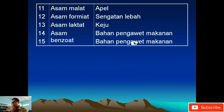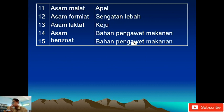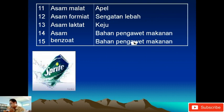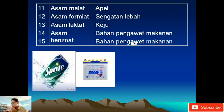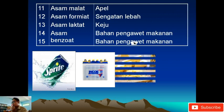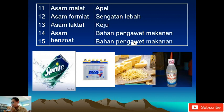Asam tartrat terdapat pada anggur, asam malat pada apel. Kalau kalian perhatikan, kalian makan anggur dan makan apel rasa asamnya pun berbeda karena asamnya juga berbeda. Asam formiat ini pada sengatan lebah, maka sengatan lebah pada titik-titik tertentu bisa menjadi terapi kesehatan. Kemudian asam laktat terdapat pada keju. Asam benzoat digunakan untuk bahan pengawet makanan. Ini contohnya pada Sprite dan pengisi aki. Ini adalah barang-barang atau makanan yang mengandung sifat asam.